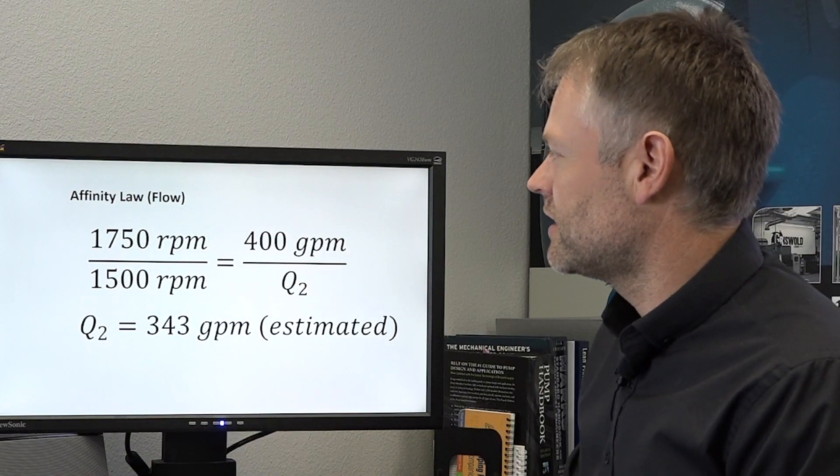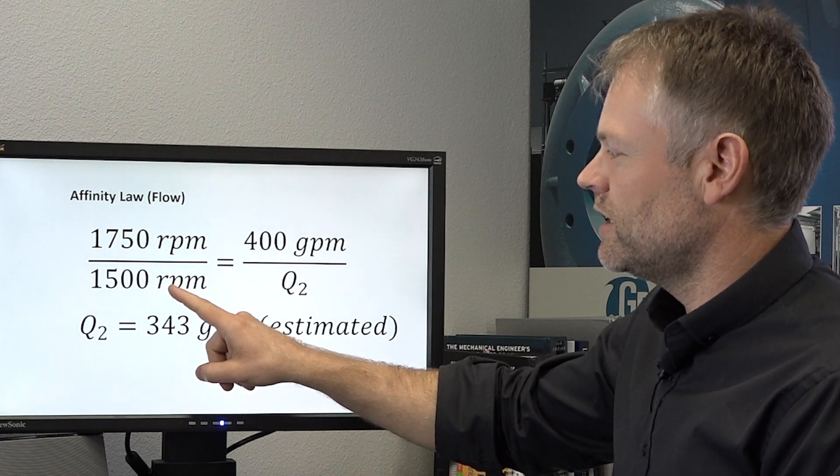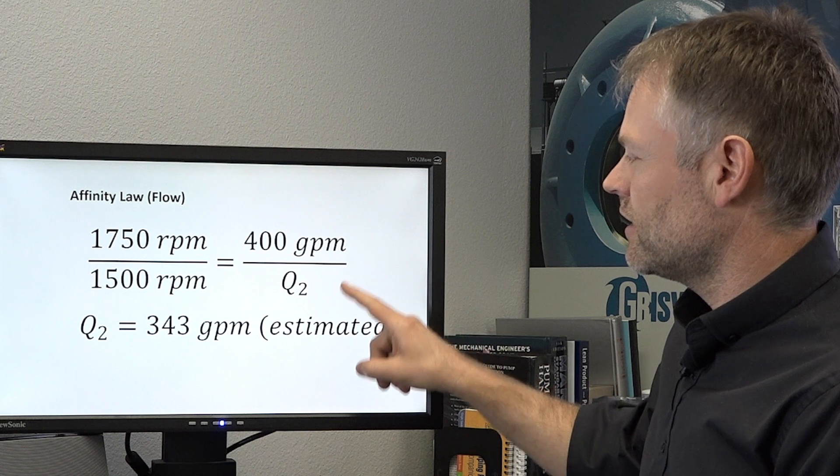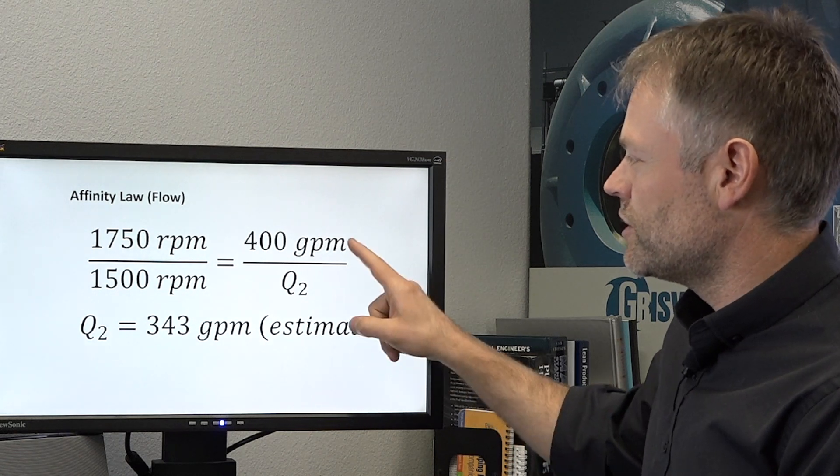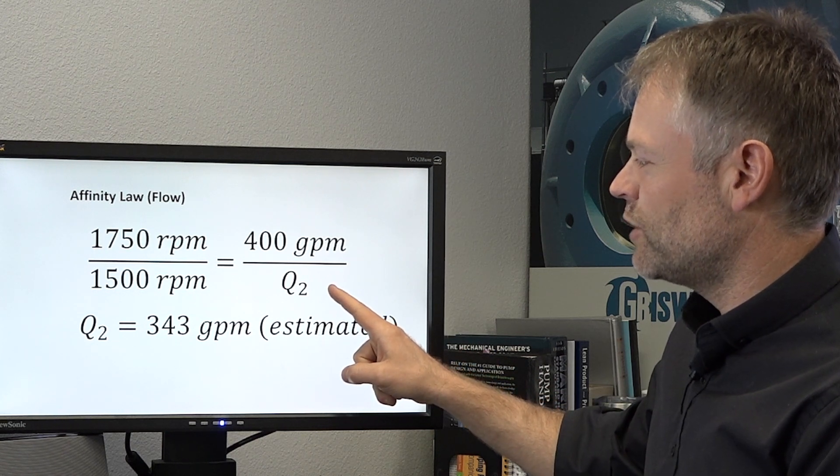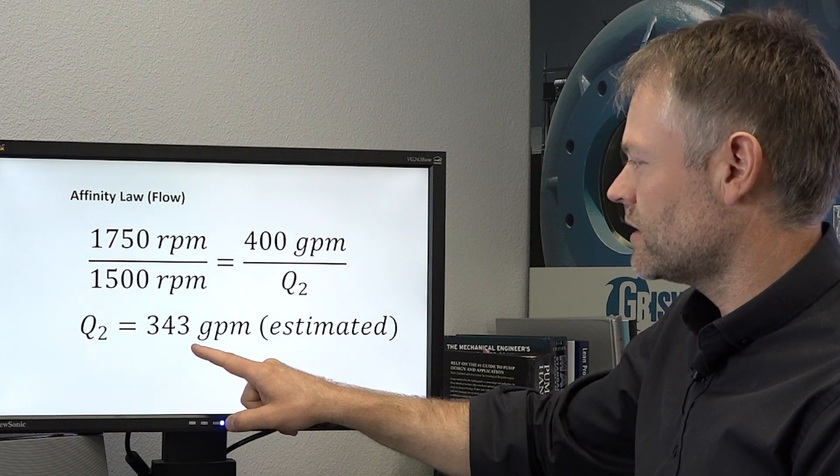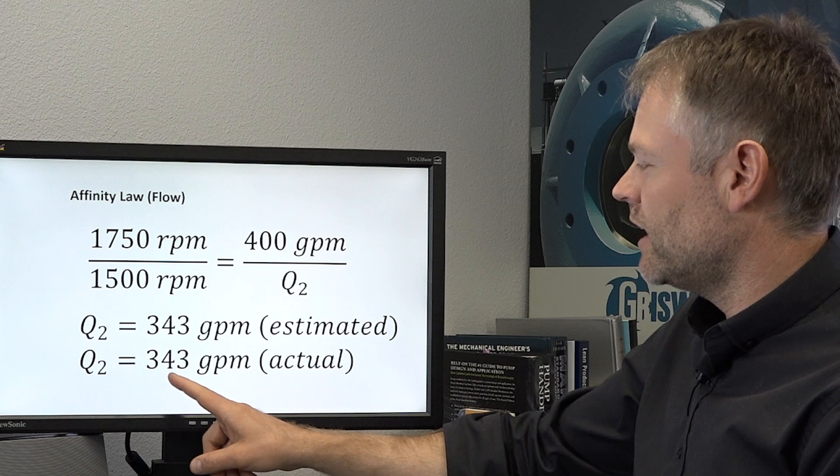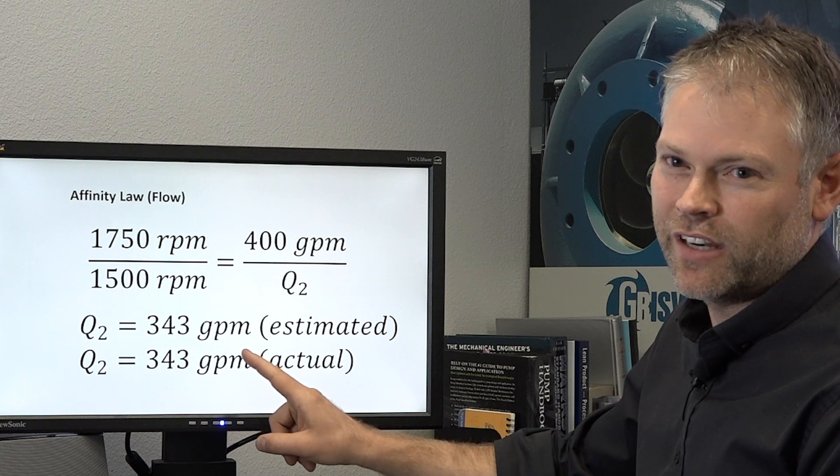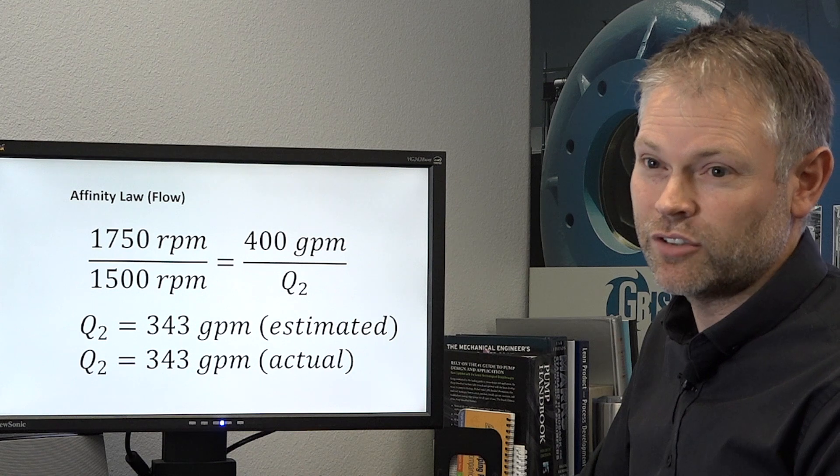As we saw in the test lab, we started with the pump operating at 1750 rpm and we reduced the speed to 1500 rpm. We can use these to help calculate the change in flow. We started with 400 gallons per minute, and by calculating for our estimated future flow, we would expect the pump to operate at 343 gallons per minute. When we were out at the test lab we saw that the actual flow was 343, so as you can see the pump affinity laws did a very good job of estimating the pump's performance after changing speed.